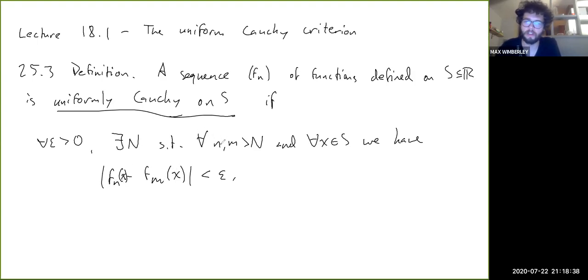And then instead of for all n greater than N, you have for all n and m greater than N. So we just did the exact same modification to the definition of uniform convergence for sequences of functions. We just added in this m, and instead of having f, we have fm. So it's the difference between two terms in the sequence.